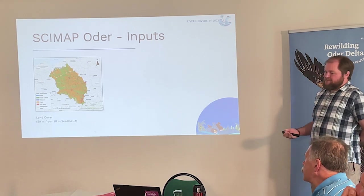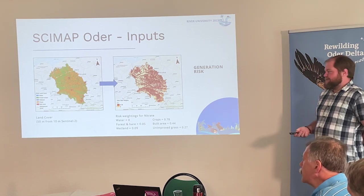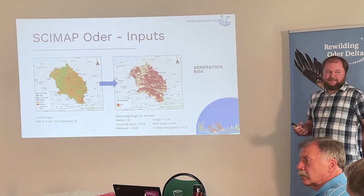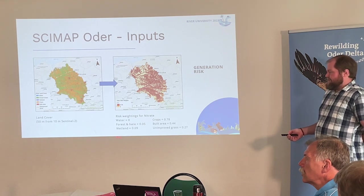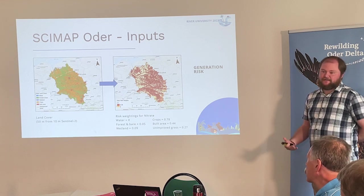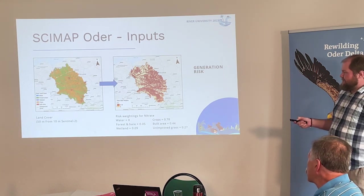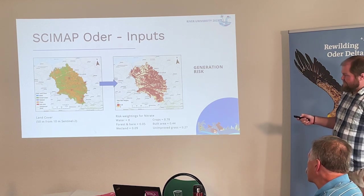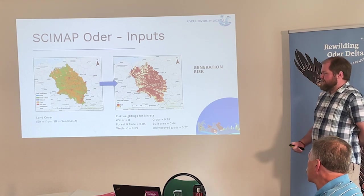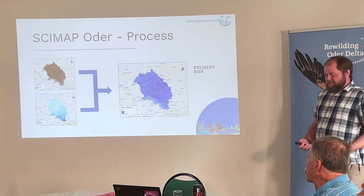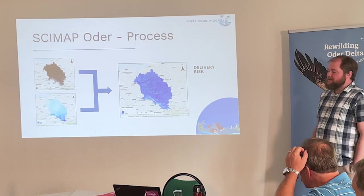From the land cover map, we develop the parameters for SCIMAP — a series of risk weightings. Each land cover within the environment receives a weighting between 0 and 1, describing how likely that land cover is associated with a particular pollutant type. The weightings shown here are derived from a UK catchment, used as an example, and give the relative risk of the different land covers as a source of nitrate. Crop areas are associated with the highest relative risk, while areas of forest and bare ground, shown in pale yellow, are the low-risk areas. These parameters define generation risk for SCIMAP — the potential availability of sources.